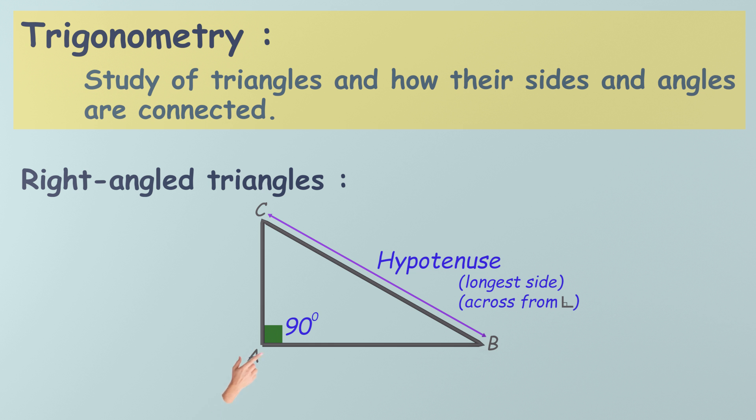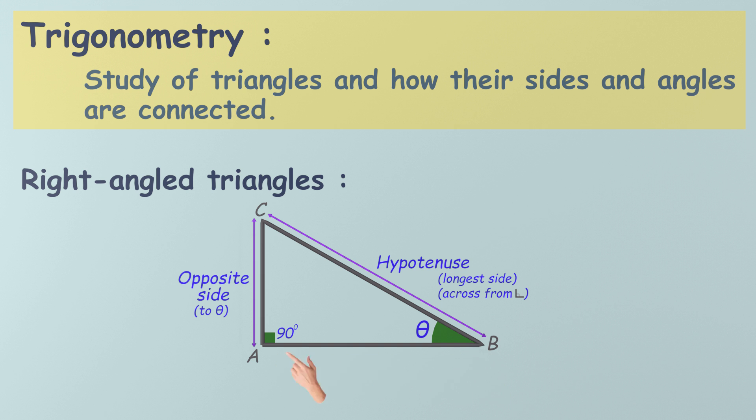Now, let's pick an angle and call it theta. The side opposite to theta? We simply call it the opposite side. Makes sense, right? The side right next to theta, but not the hypotenuse? That's the adjacent side.